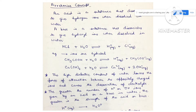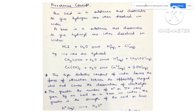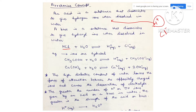According to Arrhenius, an acid is a substance which when dissociates gives you the H positive ions when dissolved in water. For example, HCl when dissolved in water gives you the H positive ion and Cl negative ion. Since it gives you the H positive ion, it is an Arrhenius acid. A base is a substance which gives you the OH minus ions, or hydroxyl ions, when dissolved in water.